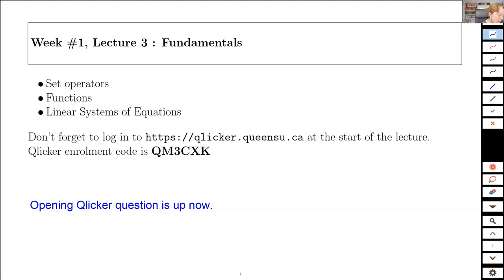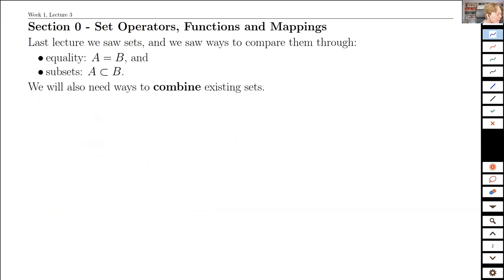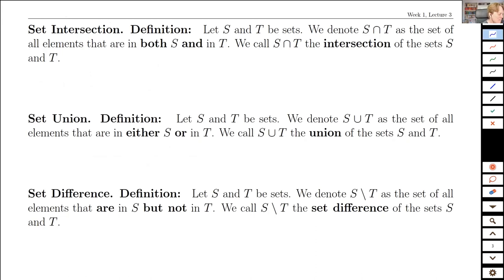We'll have a couple of clicker questions scattered throughout the lecture today. So we've seen the element and subset operations, and there are obviously other ways we can combine sets — comparing them, putting them together, taking them apart. Most of you will have seen these operations whether you formalized them or not. The idea of a set intersection: let's start off with two sets, we'll call them S and T. I think of the intersection symbol as an N shape — N for intersection.